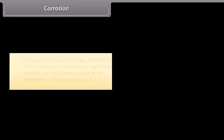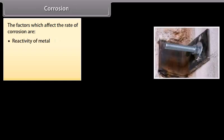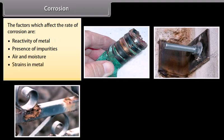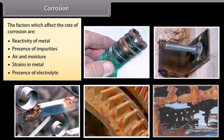Corrosion. The process of slow conversion of metals into their undesirable compounds by reaction with moisture and other gases present in the atmosphere is known as corrosion. For example, silver gets tarnished, iron rusts, copper develops green coating on its surface, and lead loses its luster. The factors which affect the rate of corrosion are: reactivity of metal, presence of impurities, air and moisture, strains in metal, and presence of electrolyte.